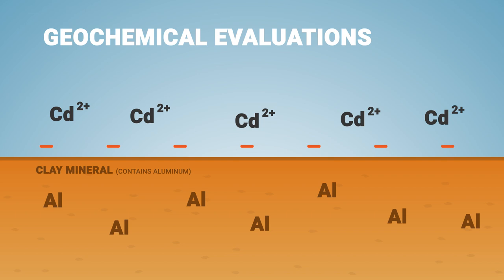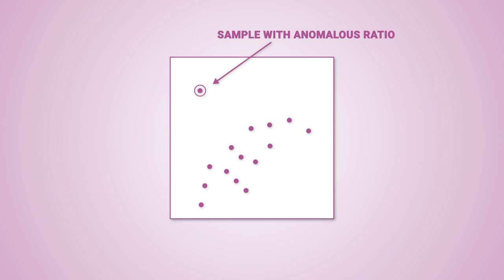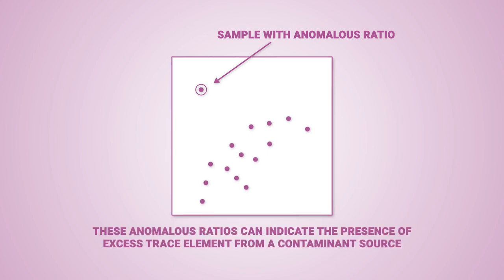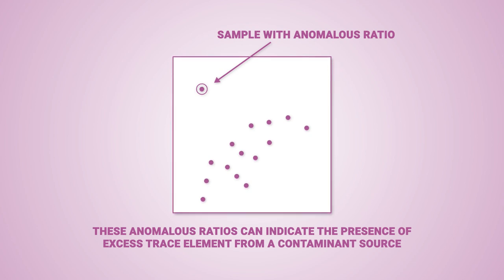Soils containing lots of clay minerals will have naturally higher concentrations of aluminum and associated trace elements. This association can be visualized using scatter plots of trace element versus major element concentrations, such as cadmium versus aluminum. During a geochemical evaluation, you may observe samples with elemental ratios that are unexpectedly different, or anomalous, compared to the ratios exhibited by other samples. An anomalous ratio may indicate that a sample contains more trace element than expected, based on the inferred soil mineral content. These anomalous ratios can indicate the presence of excess trace element from a contaminant source.